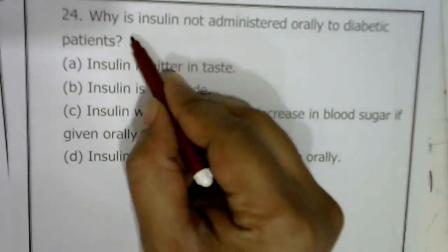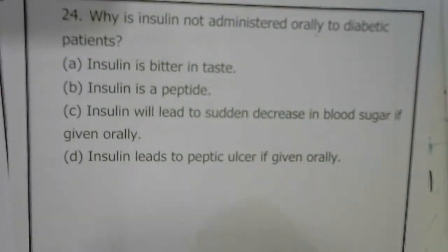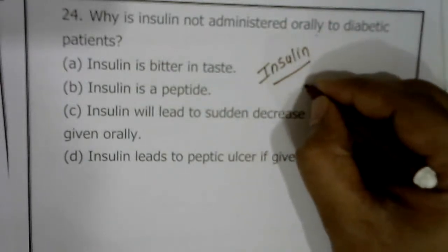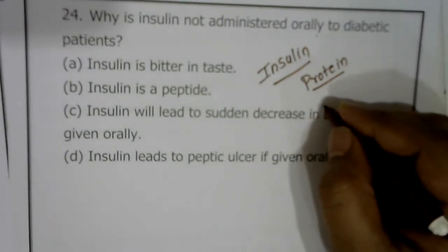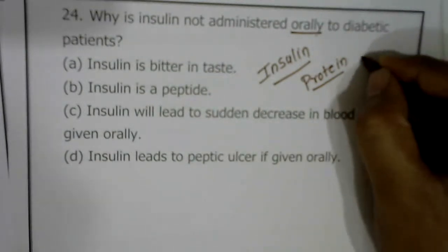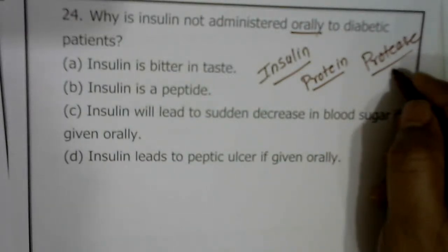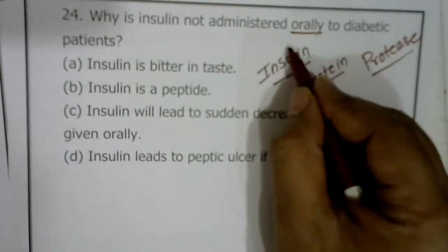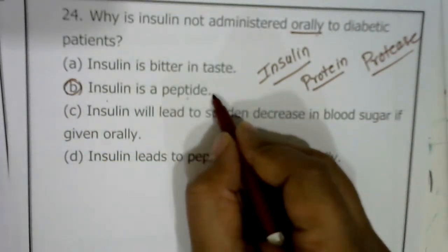Question twenty-seven: why is insulin not administered orally to diabetic patients? Insulin is a hormone made up of protein — polypeptide chains. If taken orally, it enters the digestive system where protease enzymes digest or degrade the insulin protein. So insulin cannot be taken orally because it leads to degradation by protease enzymes in the digestive system.